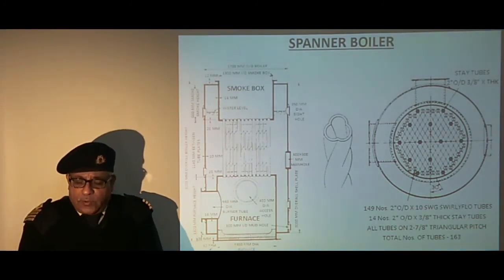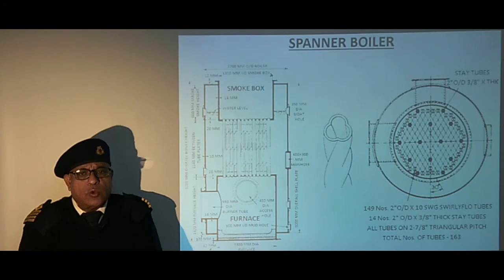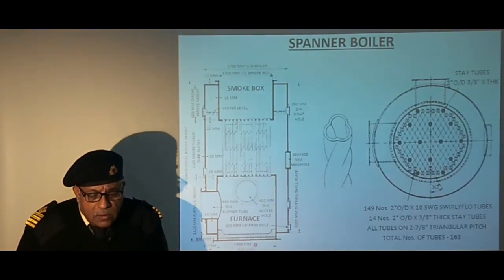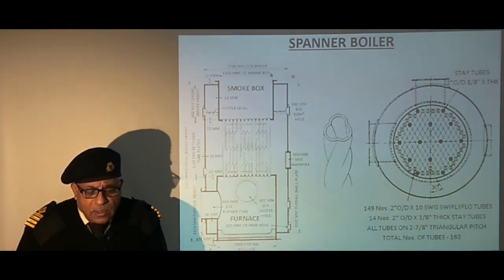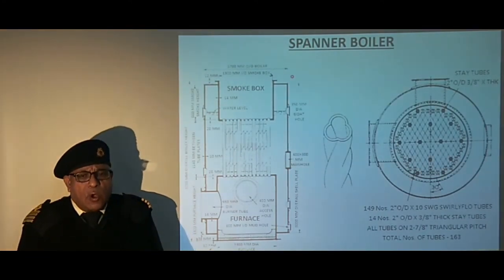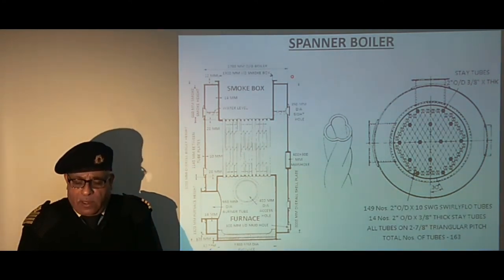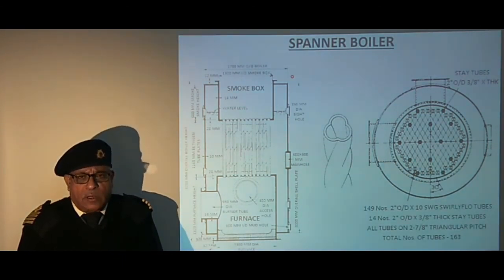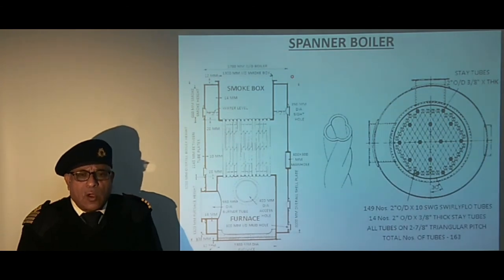The normal working pressure of this boiler is 7 bar and output ranges from 450 kg per hour to 2270 kg per hour depending on boiler dimensions. This type of boiler is nowadays not commonly seen on motor vessels but similar designs are available. This completes our study of smoke tube boilers consisting of the Scotch boiler, Cochrane boiler, and Spanner boiler, all of which are of similar design.